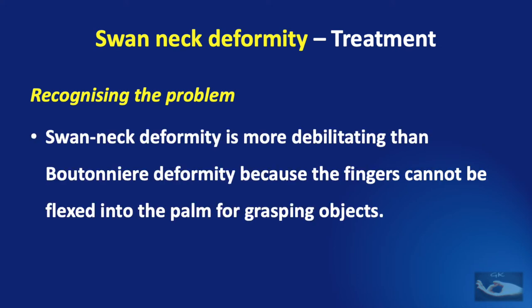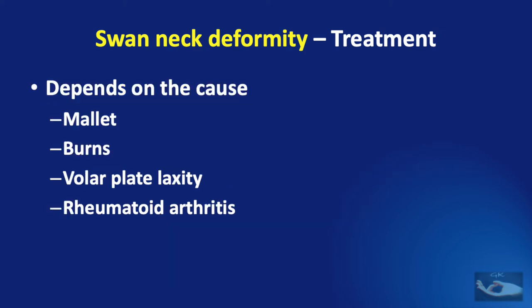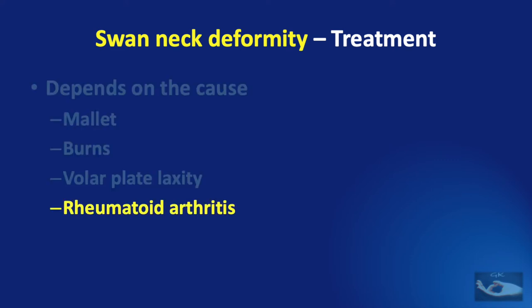Before considering treatment of the swan neck deformity, we need to recognize one important point: the swan neck deformity is more debilitating than the boutonnière deformity because the fingers cannot be flexed into the palm for grasping objects. Hence treating a swan neck deformity is very essential and important. Since there are so many etiologies, treatment of the cause of the problem is most important — whether it is due to mallet finger, burns, volar plate laxity, or rheumatoid arthritis.